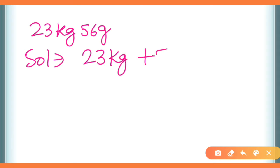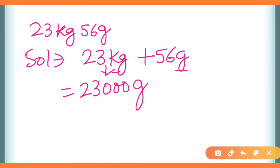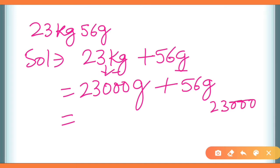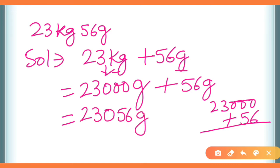One more example: 23 kilograms and 56 grams। Solution में: 23 kilograms plus 56 grams। Units different हैं, तो convert करेंगे — 23 kilograms = 23,000 grams, plus 56 grams। कुछ बच्चे 23 के नीचे 56 add कर देते हैं जो गलत है — 56 को ones place पर align करें। Answer: 23,056 grams।